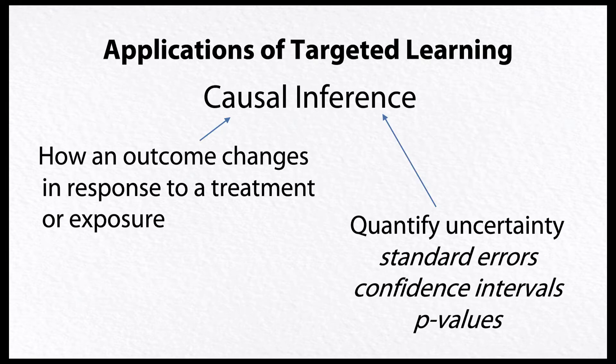Causal inference is a field concerned with how an outcome changes in response to a treatment or exposure of interest. Inference is how we quantify the uncertainty around our estimates of causal effects, including standard errors and the construction of valid confidence intervals and p-values.